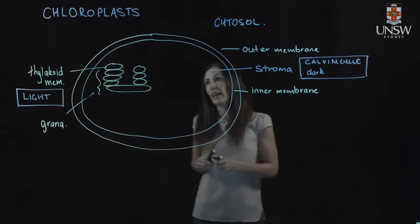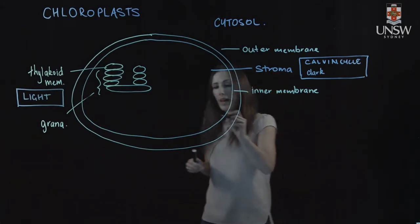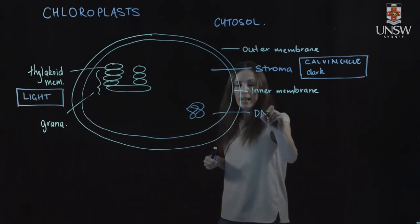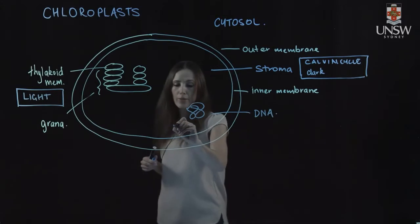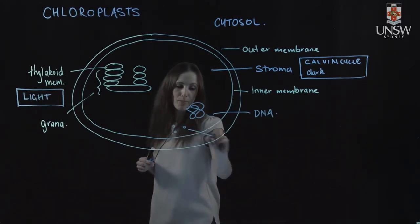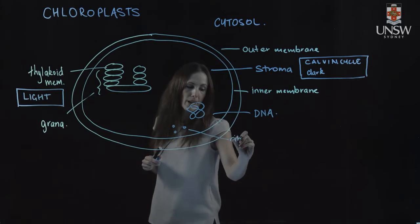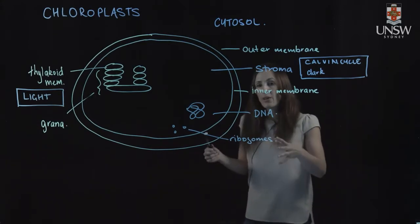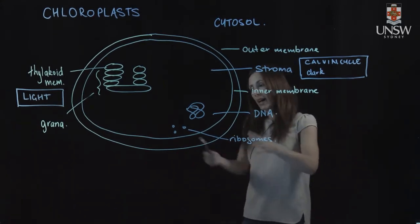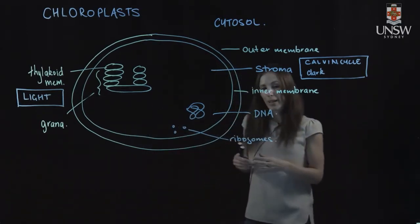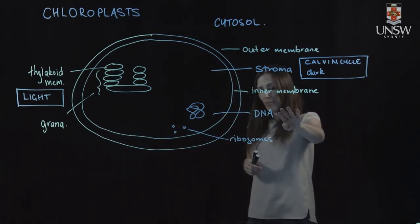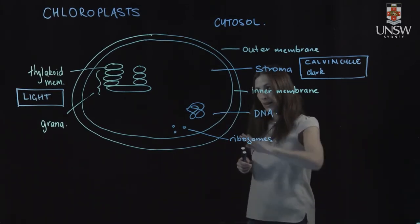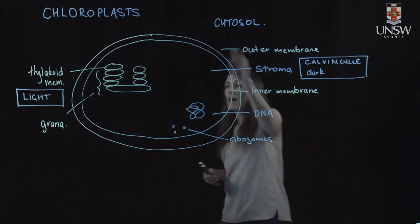Another interesting thing about chloroplasts is that they actually have their own circular DNA. So we have chloroplast DNA, and they also have their own ribosomes. So I'll just represent them in this way. And this means that our chloroplasts carry out some independent activity. So they actually divide independently from the cell by binary fission. And they can make their own proteins from the chloroplast DNA and using the ribosomes.